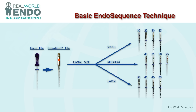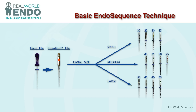For the basic EndoSequence technique, like all cases, you bring a hand file to the constriction, get patency, and work with your apex locator to get an accurate working length — typically with a number 10 or 15 file. That's step one for any technique. Then for EndoSequence, you start with the expediter file, which is orange, a non-ISO color file at 0.27mm at D1 — a size 27 file — to determine if you're dealing with a small, medium, or large canal.